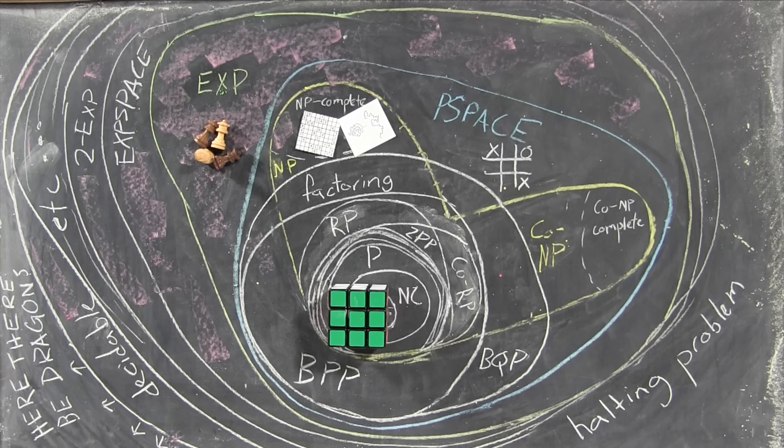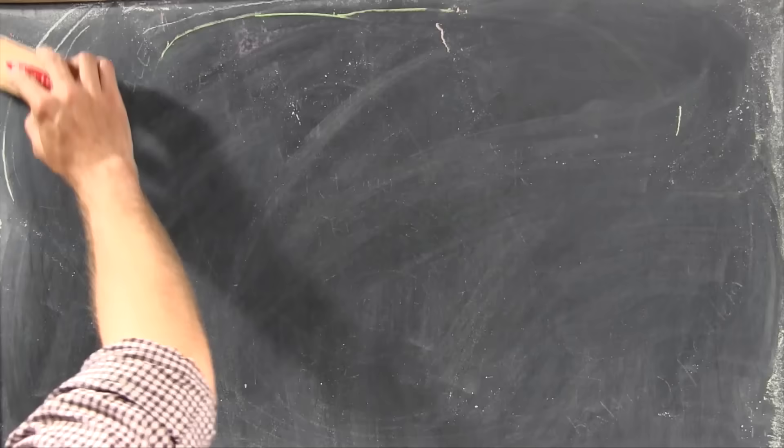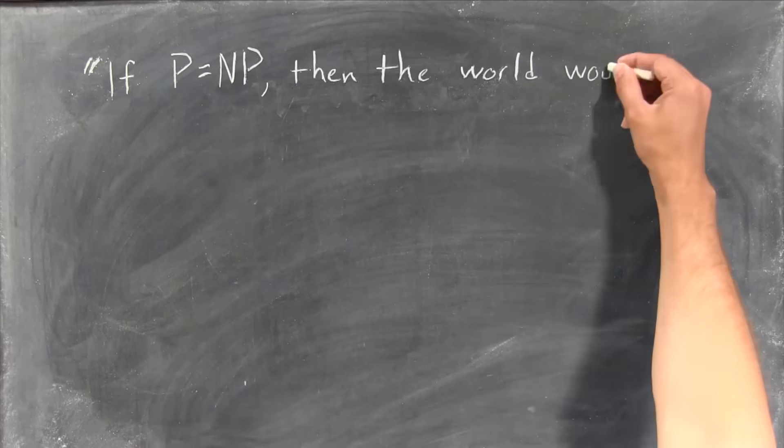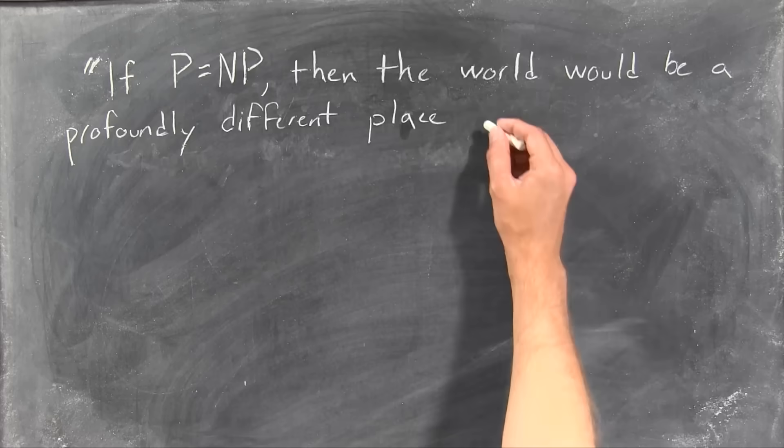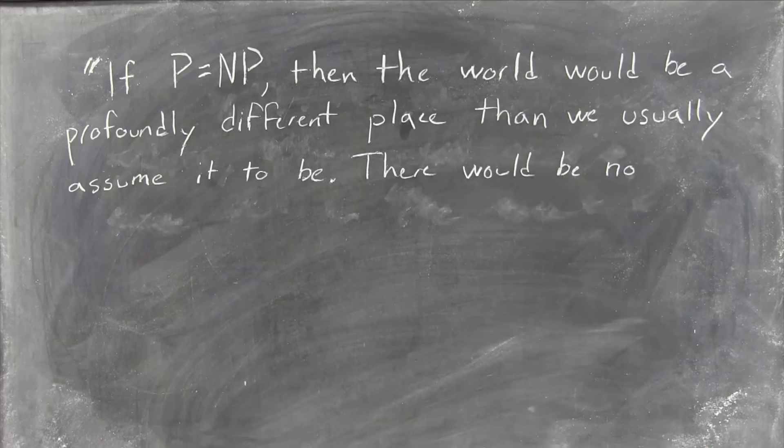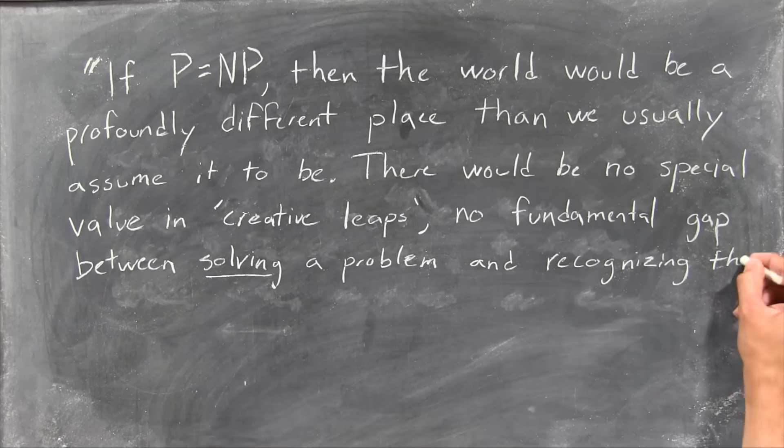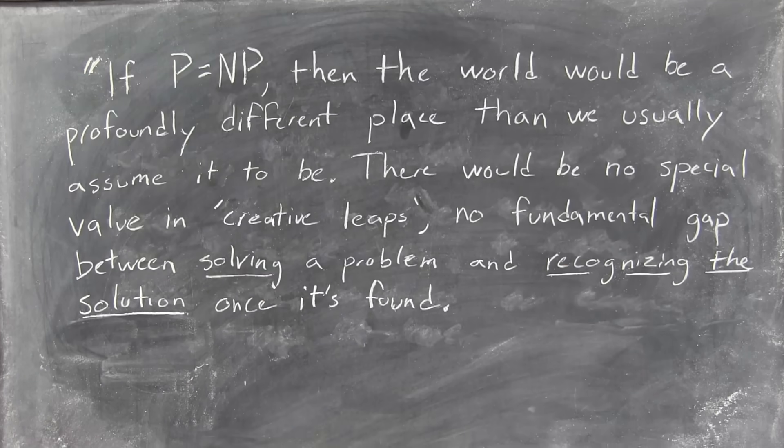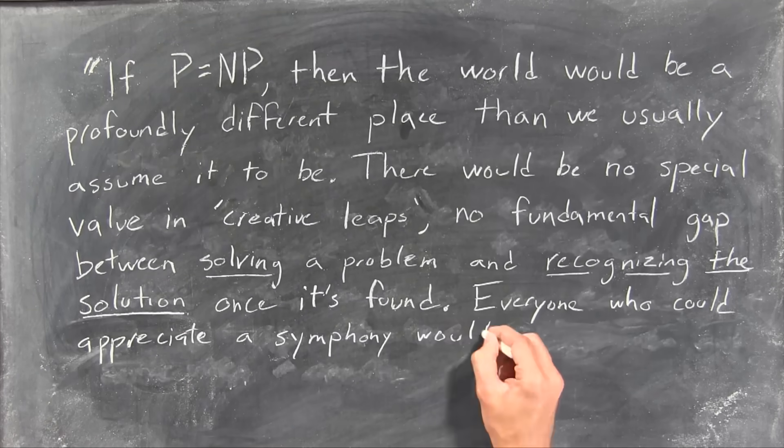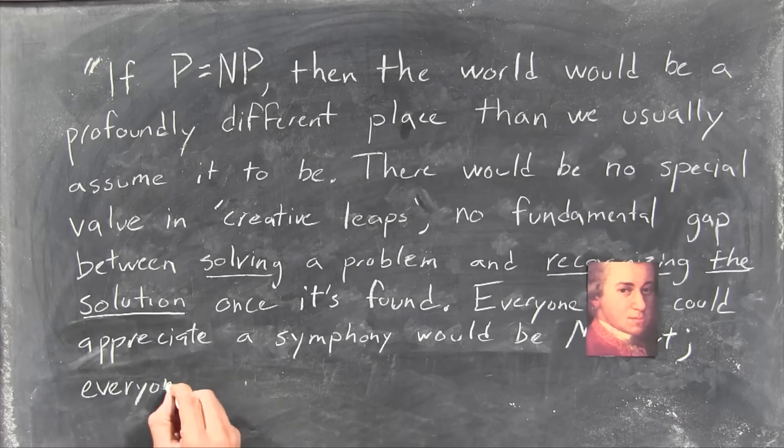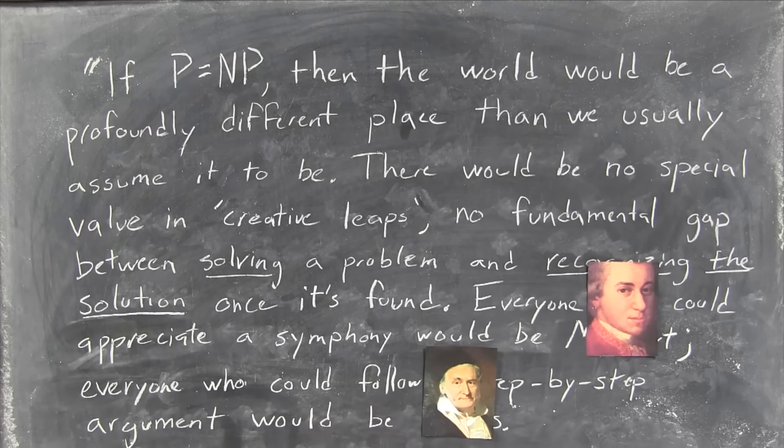As an example of those implications, here's how Scott Aaronson, a complexity researcher at MIT, explained his intuition about P versus NP. If P were equal to NP, then the world would be a profoundly different place than we usually assume it to be. There would be no special value in creative leaps, no fundamental gap between solving a problem and recognizing the solution once it's found. Everyone who could appreciate a symphony would be Mozart. Everyone who could follow a step-by-step argument would be Gauss.